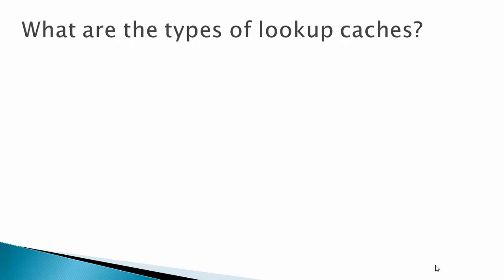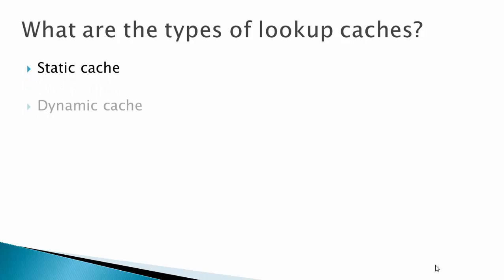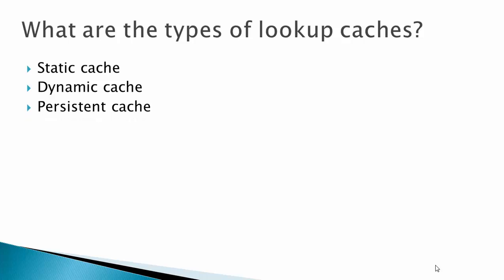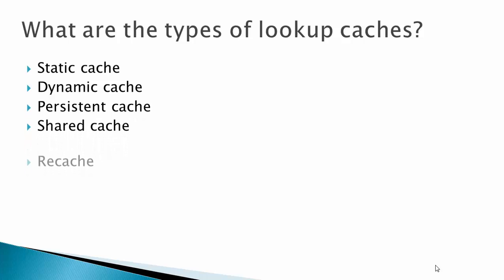What are the types of lookup caches? The types are: static cache, dynamic cache, persistent cache, shared cache, and recache.